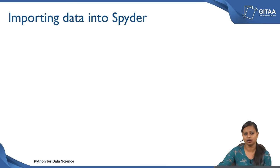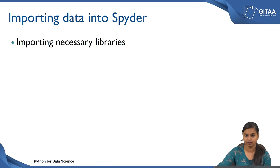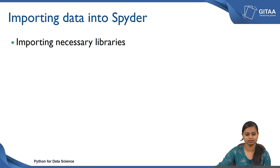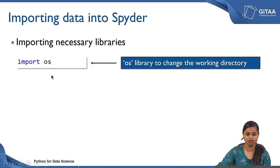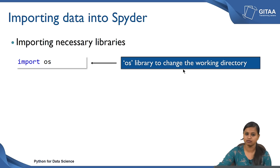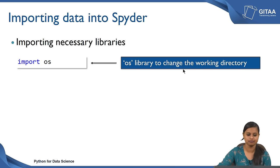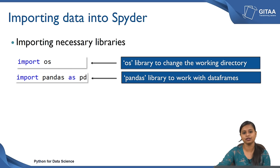We are going to look at how to import data into Spyder. Before importing data, you have to load or import the necessary libraries. The first library being OS — in order to import any library we use the command 'import' followed by the library name. We import the OS library to change the working directory. There might be cases where you want to work with some data, in which case you can change your working directory to wherever you have saved your data.